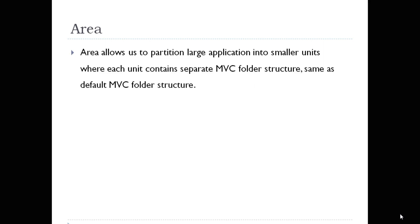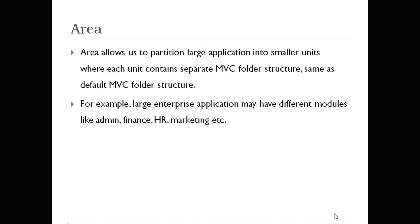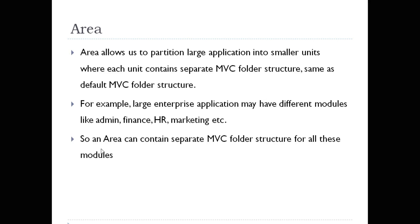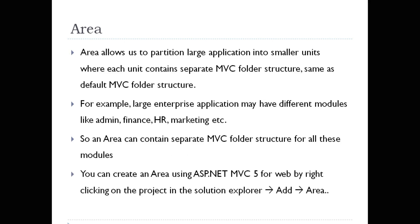Similarly, when you create an MVC application and define an area in it, it also creates the same MVC folder structure for each and every area. This is useful whenever you are developing a large enterprise application which may have different modules like admin, finance, HR, and marketing. In that case you can create areas — this is for separation of purpose. Each area contains a separate MVC folder structure for all these modules. To create an area, just right click on your project and say Add Area.